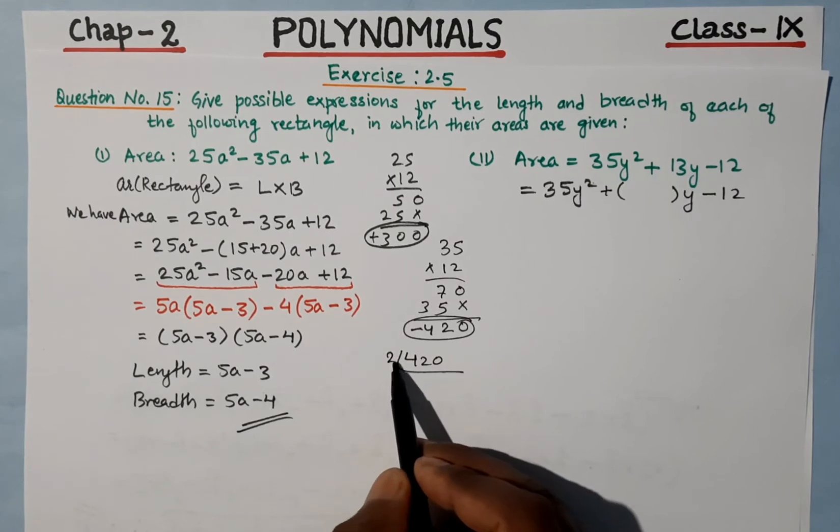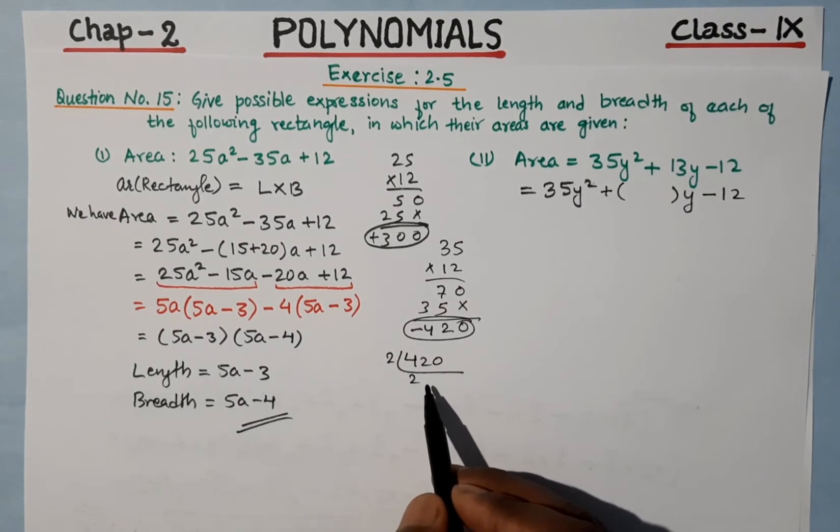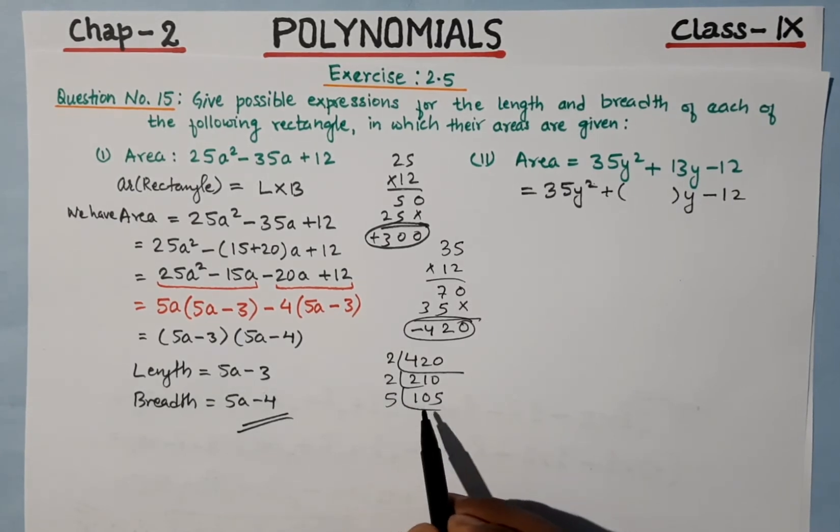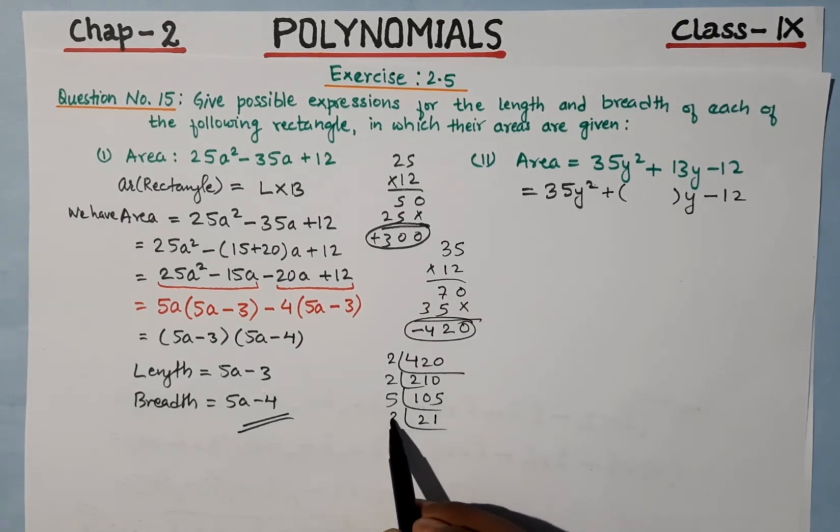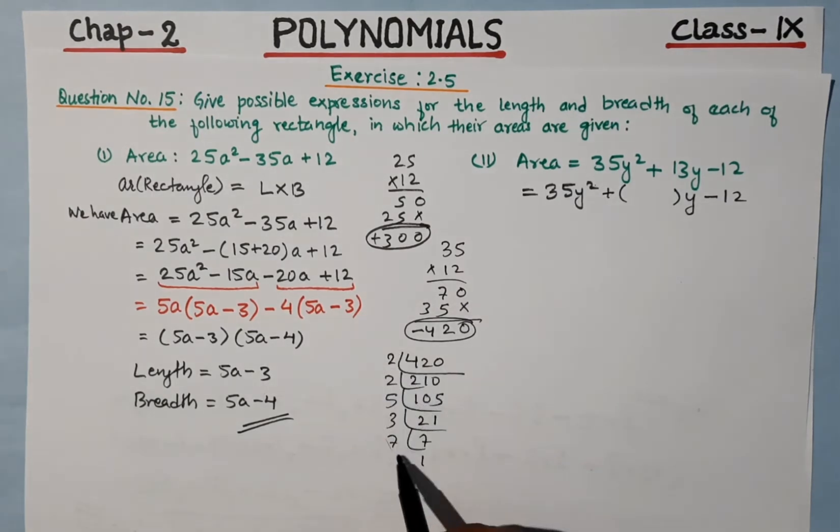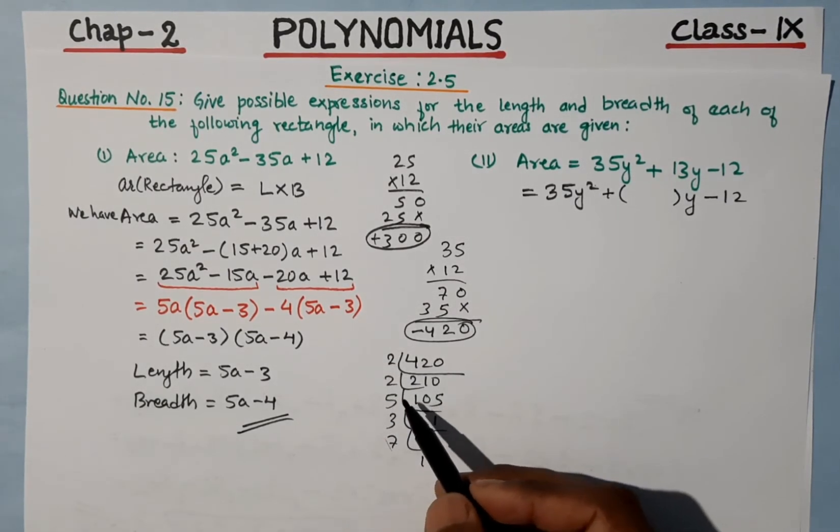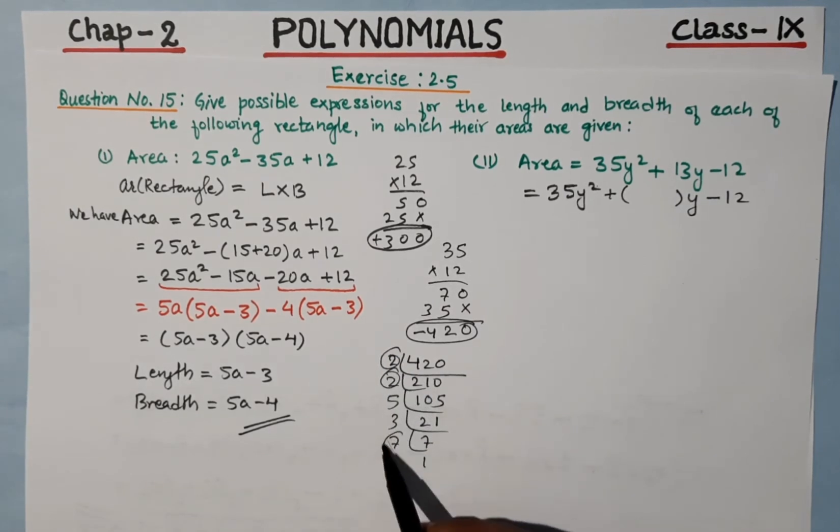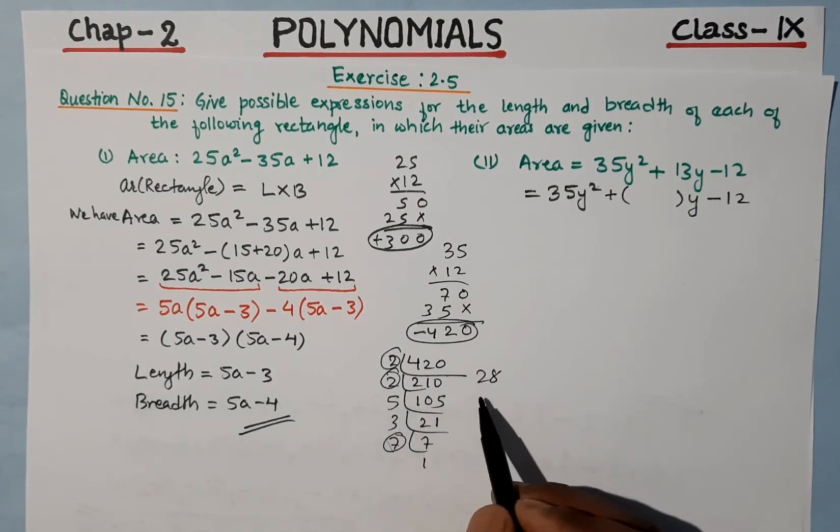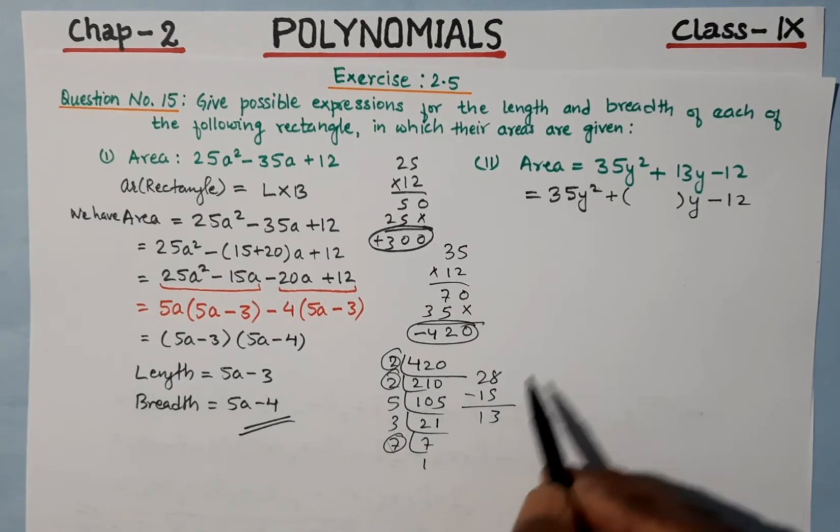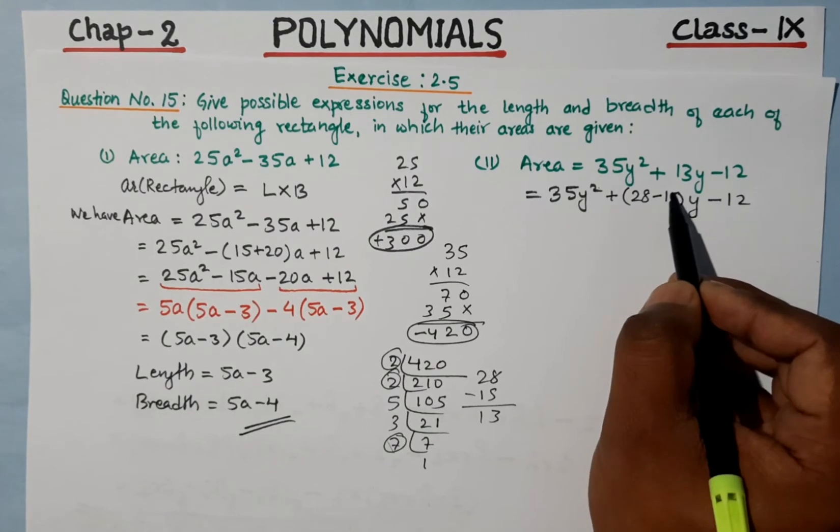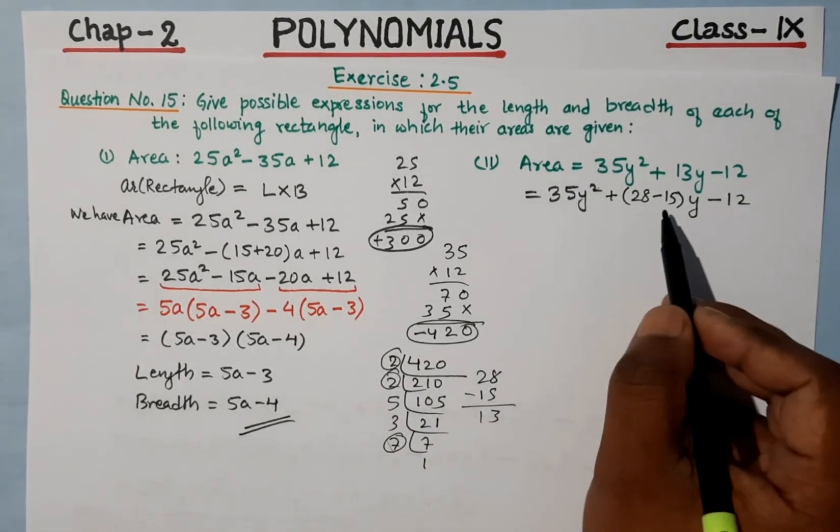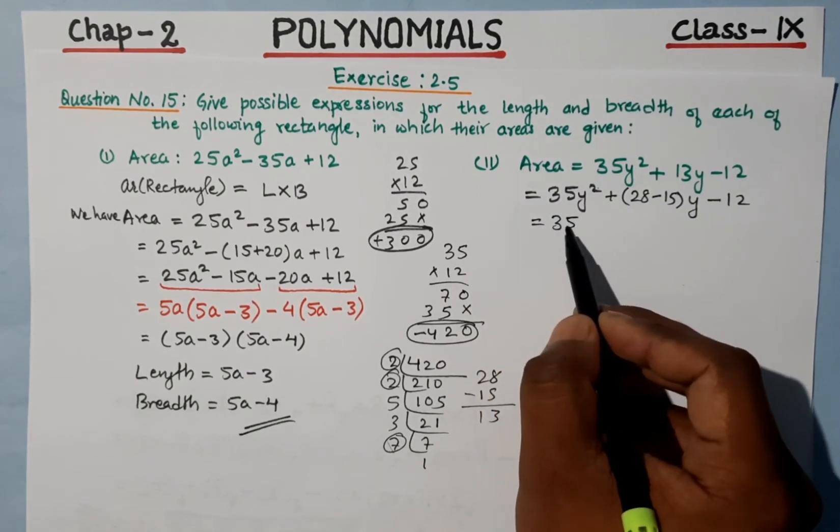We need to factor. Let's find: 2, 2, 4, 5, 10, 5, 5, then 3, 7, 7. We need to rearrange numbers to get 13. Looking at factors: 28 and 15. 28 minus 15 gives 13, and 28 into 15 gives 420.